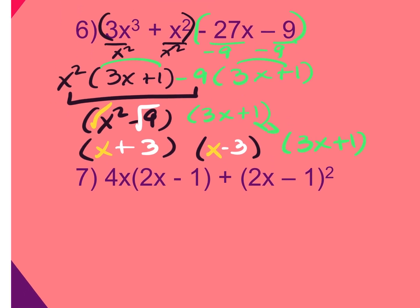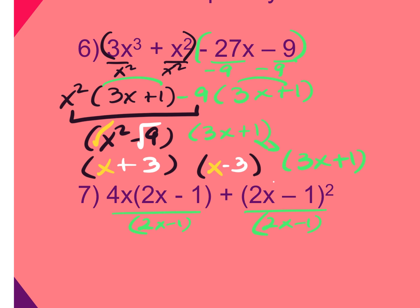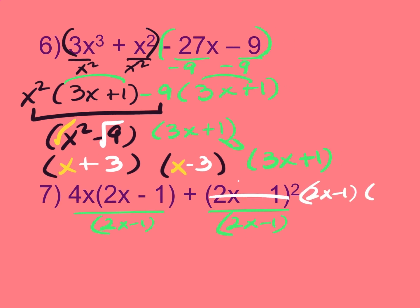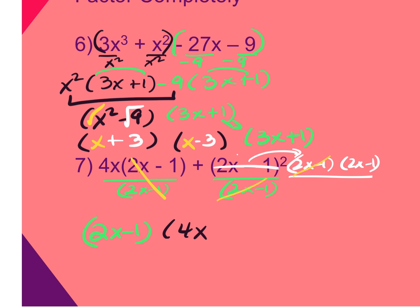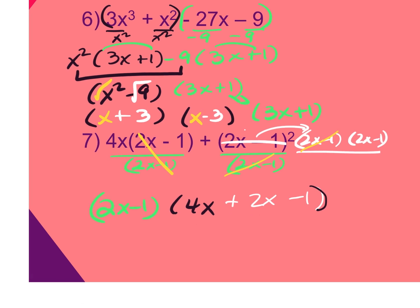Remember, your GCF can be a binomial. What is in common to both terms is the GCF of 2x minus 1. It may help to think of the squared term as 2x minus 1 times 2x minus 1. Put the GCF on the outside, divide — one factor cancels, leaving 4x; on the other side one cancels, leaving 2x minus 1. Combine like terms in the parenthesis: 4x plus 2x is 6x minus 1, then bring down the GCF. Done.